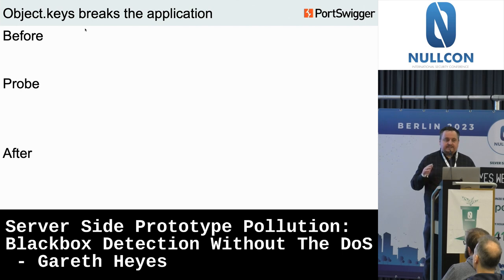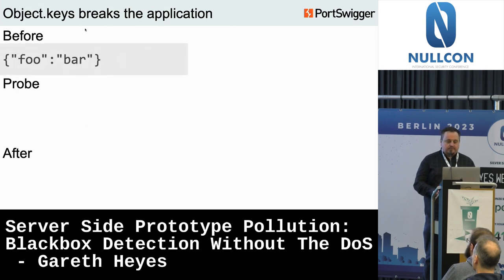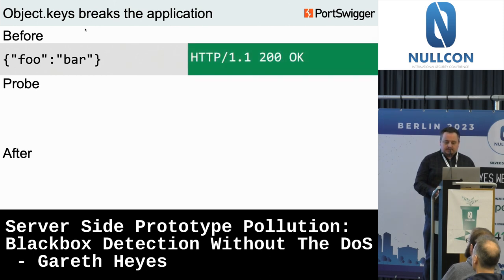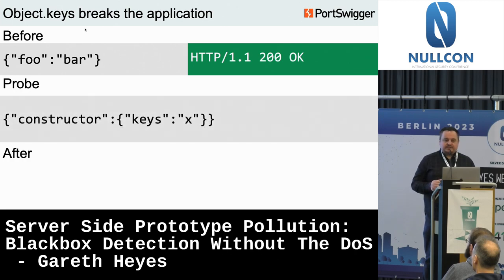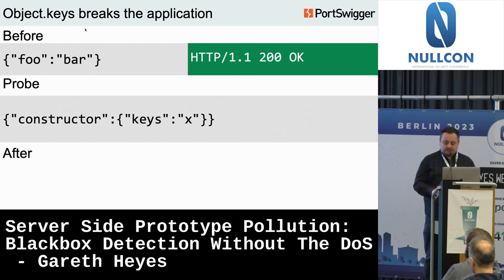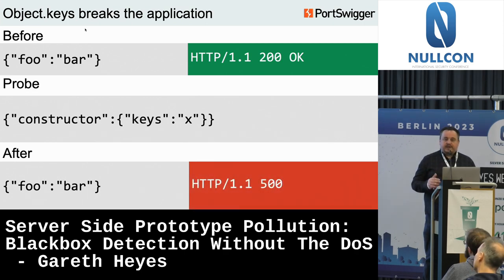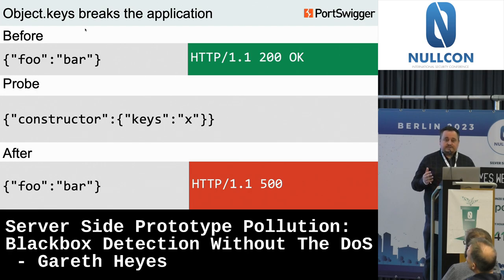After many failed attempts I took a different approach. This technique changes the methods on the object constructor itself. Before the probe, sending JSON data gets a 200 back. When the probe is sent, I change the 'keys' method on the object constructor — this isn't actually prototype pollution since no prototypes are involved, but it lets you determine whether you have control over properties via JSON. When you resend the base request, you get an internal server error because the keys function is now a string and throws an exception. Again, causes denial of service — not great.